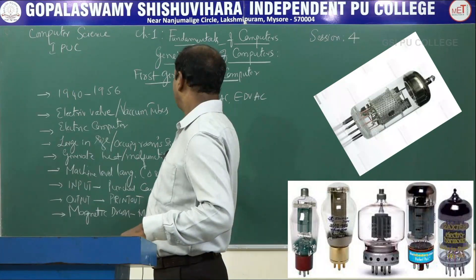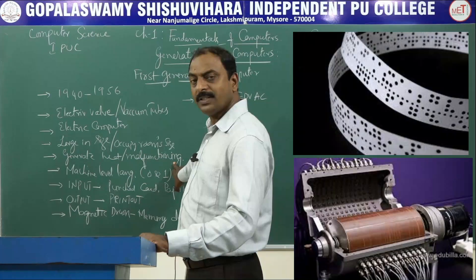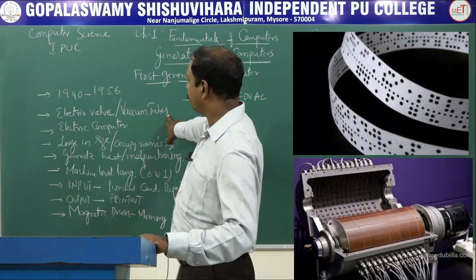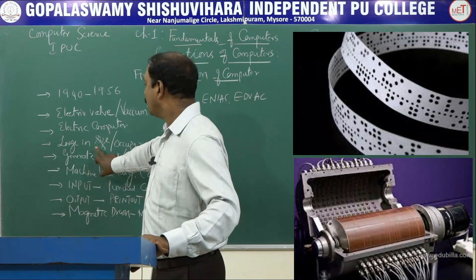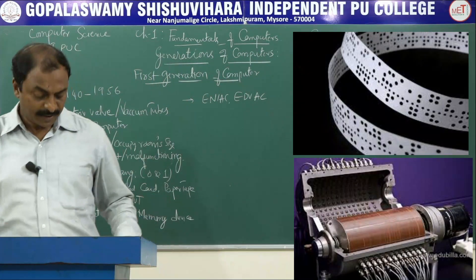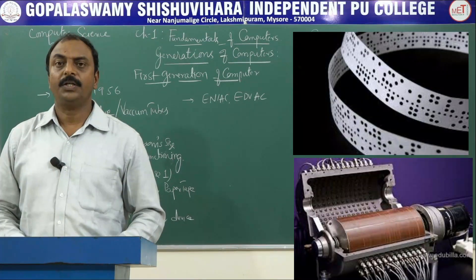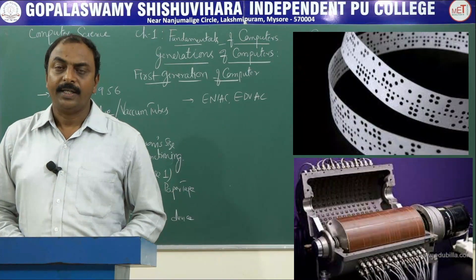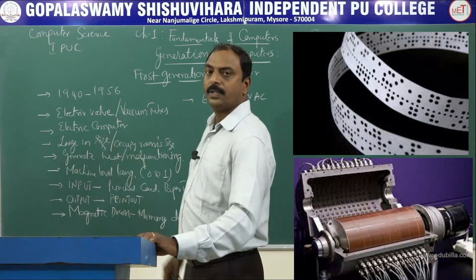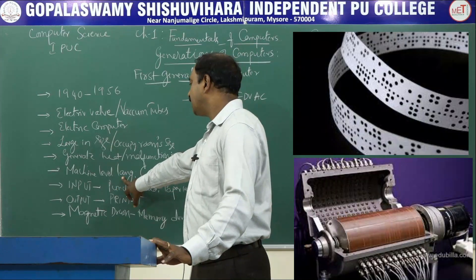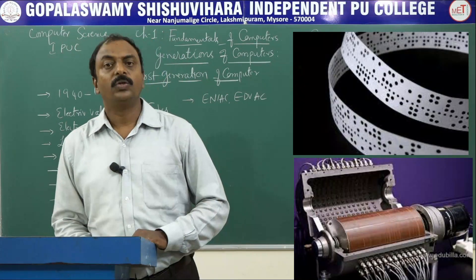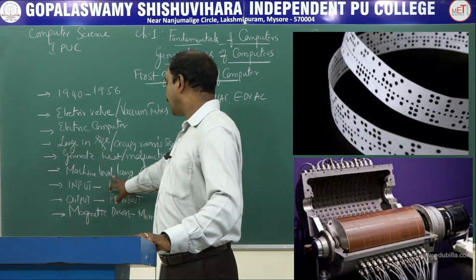Because it is an electrical device, it used to generate a lot of heat. This led to malfunctioning of the system. As they were using more number of electric valves or vacuum tubes, obviously the size of the computer increased. These first generation computers were very big in size and could occupy an entire room. The users or programmers used to sit around the system and work with different terminals. These computers were using machine level language — a language of zeros and ones — for programming.